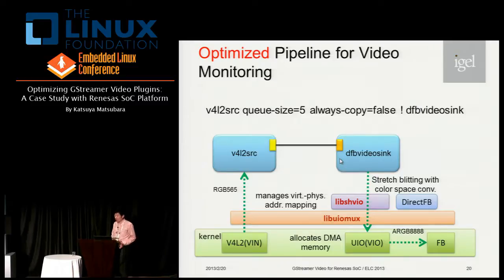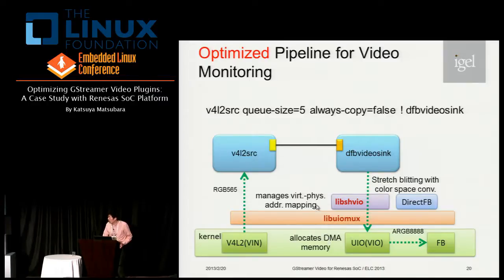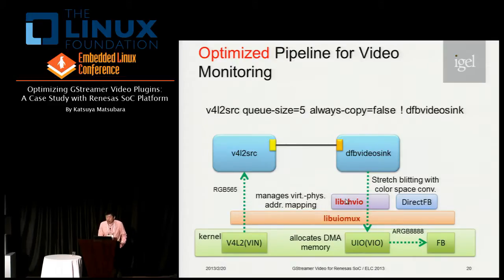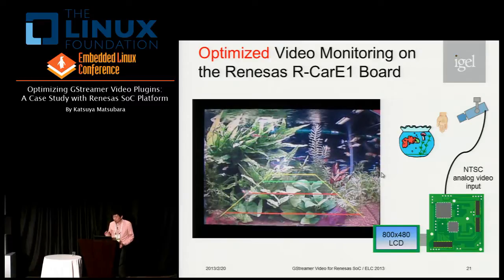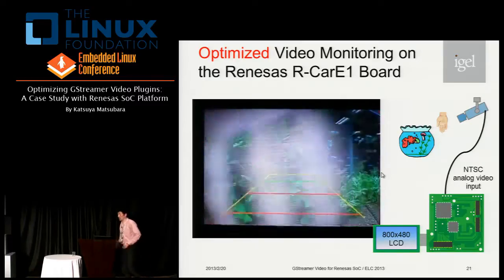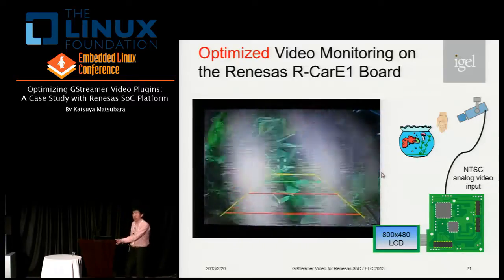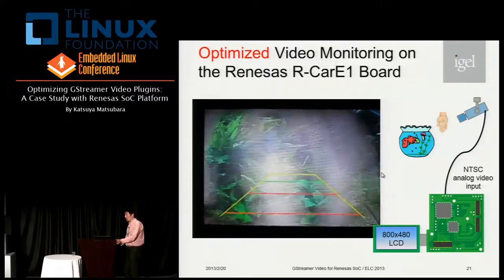This slide shows the optimized pipeline for video monitoring. The UIO kernel driver allocates DMA memory and exports it through LibUIoMax. LibUIoMax manages virtual-to-physical address translation for DMA memory and I/O memory. LibRshVIO controls the VIO hardware directly through UIO. DFB video sink realizes hardware-accelerated stretch-blitting and color conversion with LibRshVIO. Let's check the revised video monitoring on the target board — the performance is quite good enough, with low CPU load because of memcopy elimination.